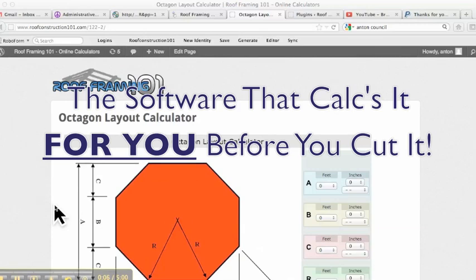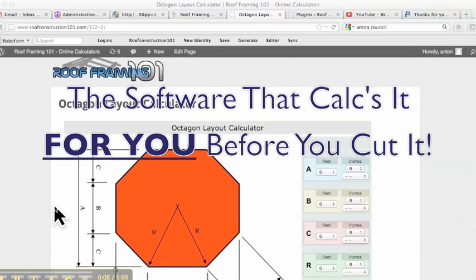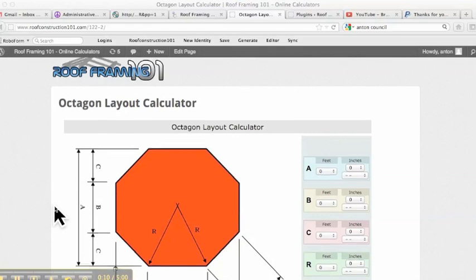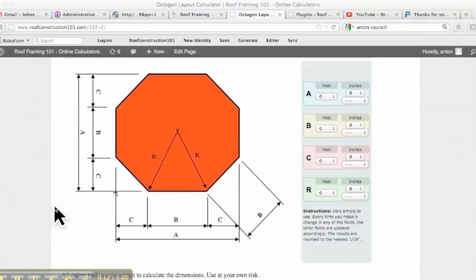It doesn't actually figure out the roof for you. That's our octagon rafter layout calculator. This just gets you the layout of your actual octagon.